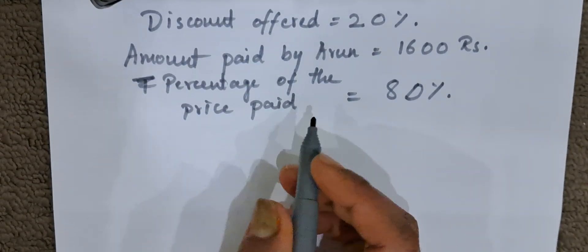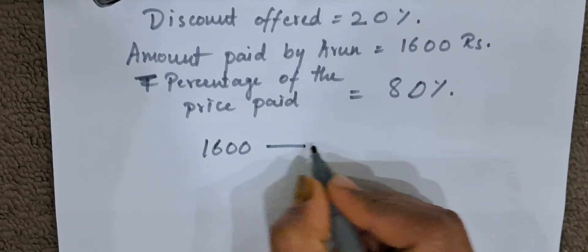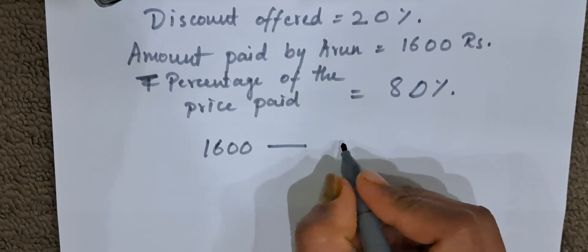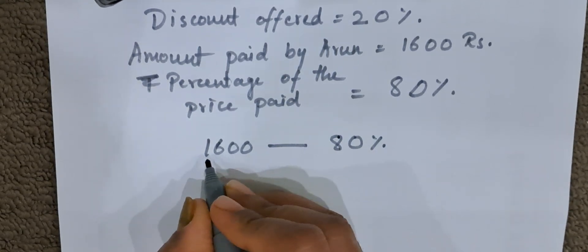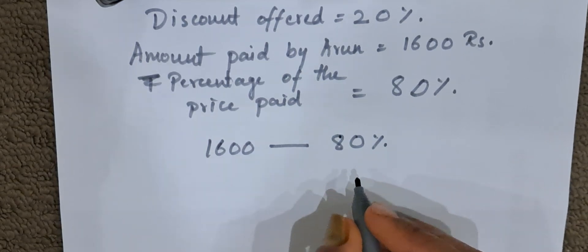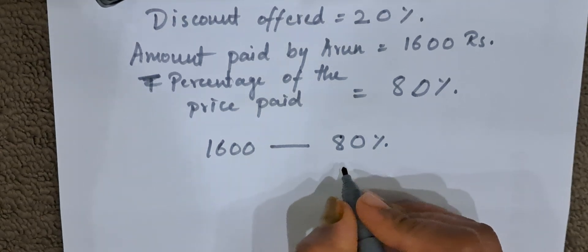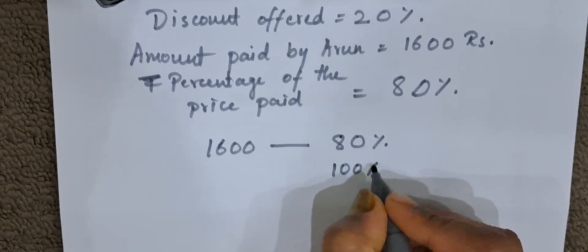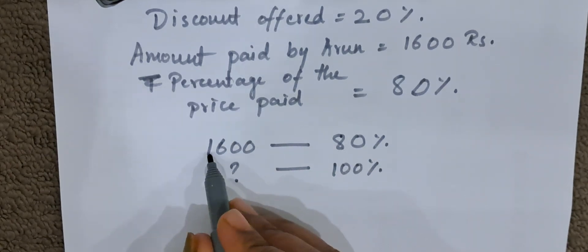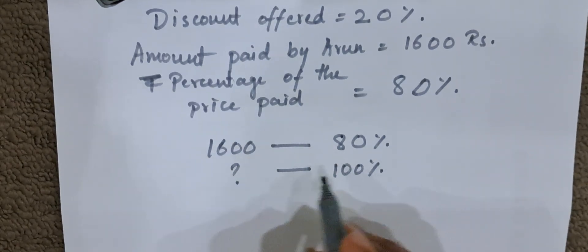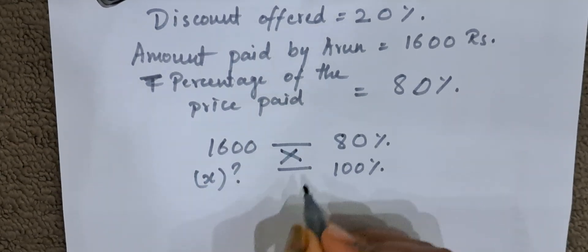We know that 1600 is the amount he has paid after 20% discount. That means he has paid 80%, which equals 1600. Now they are asking us to calculate the whole marked price — that is before discount, which is 100%. So we will do cross multiplication. Let us take the unknown as X.